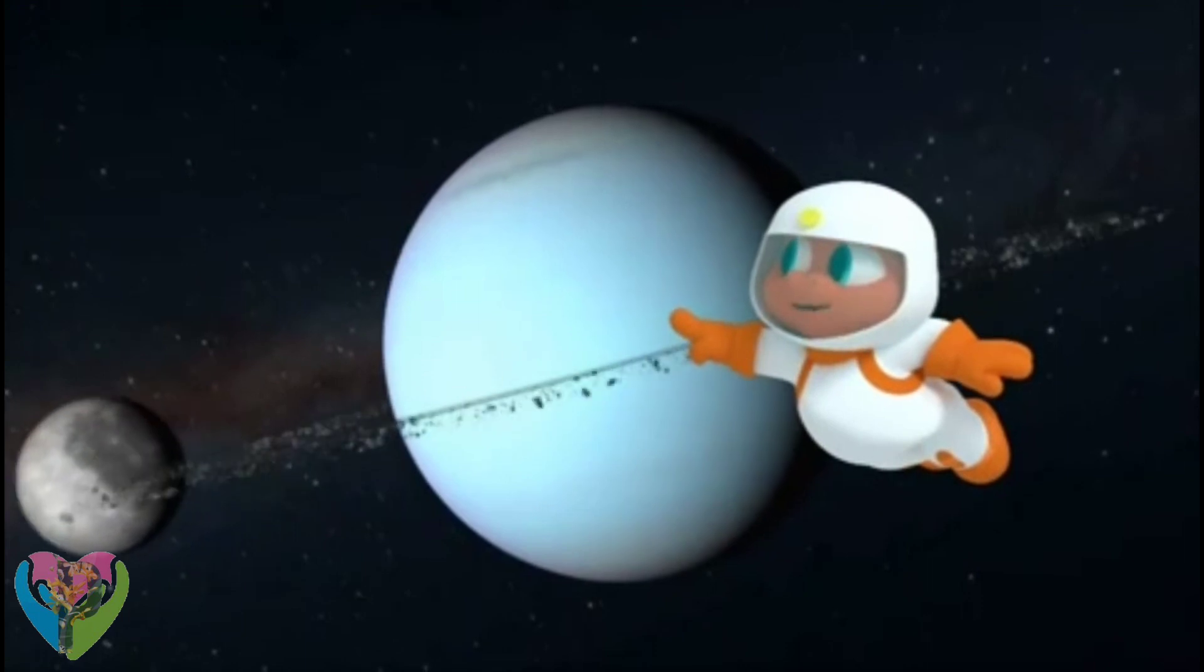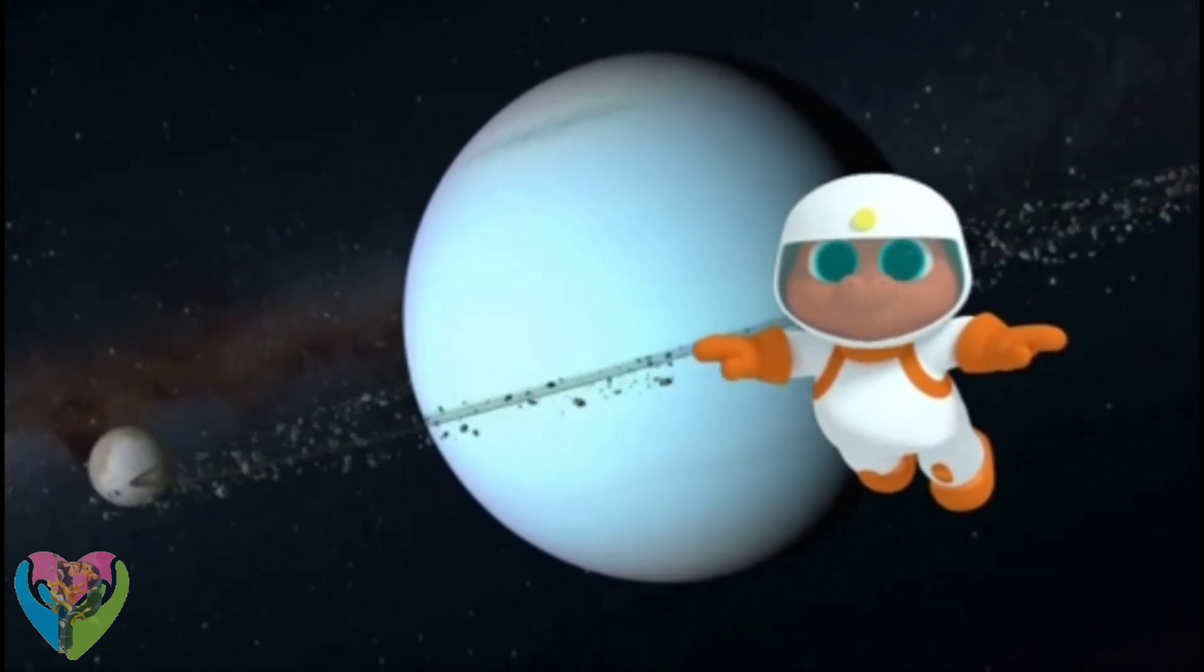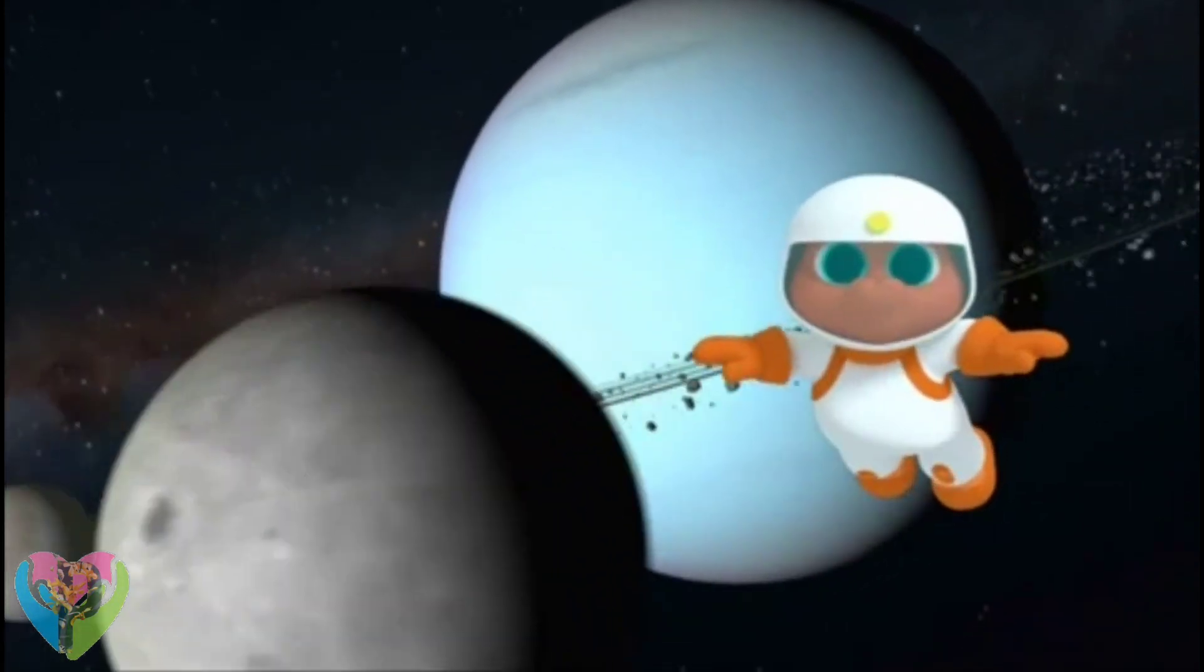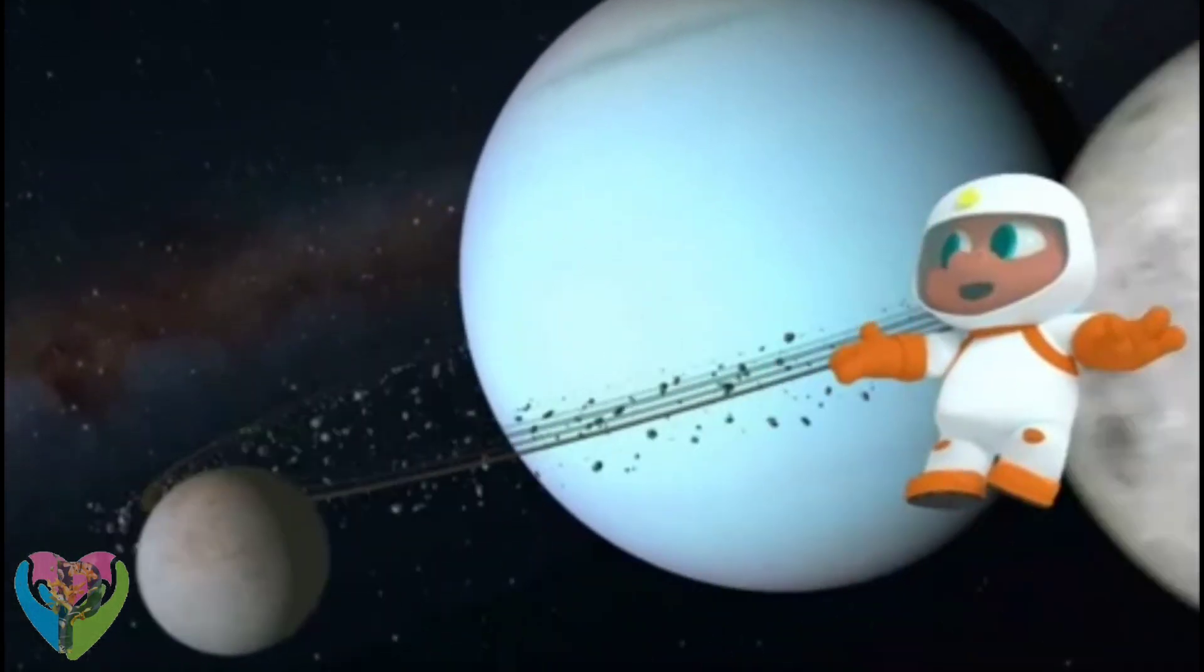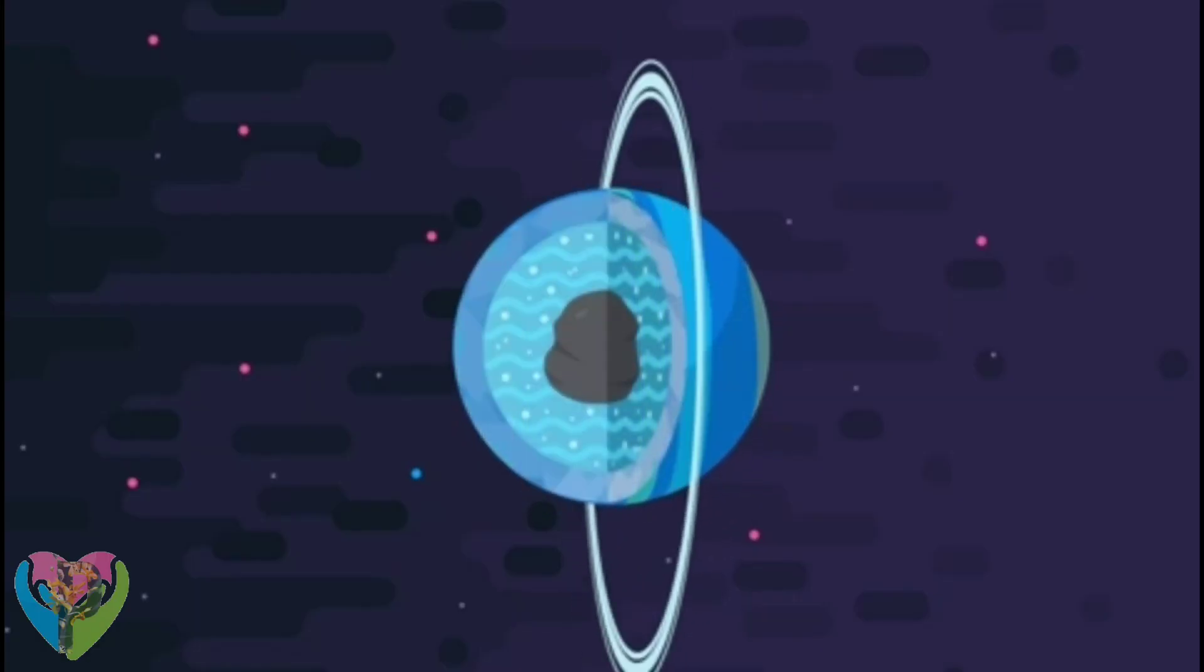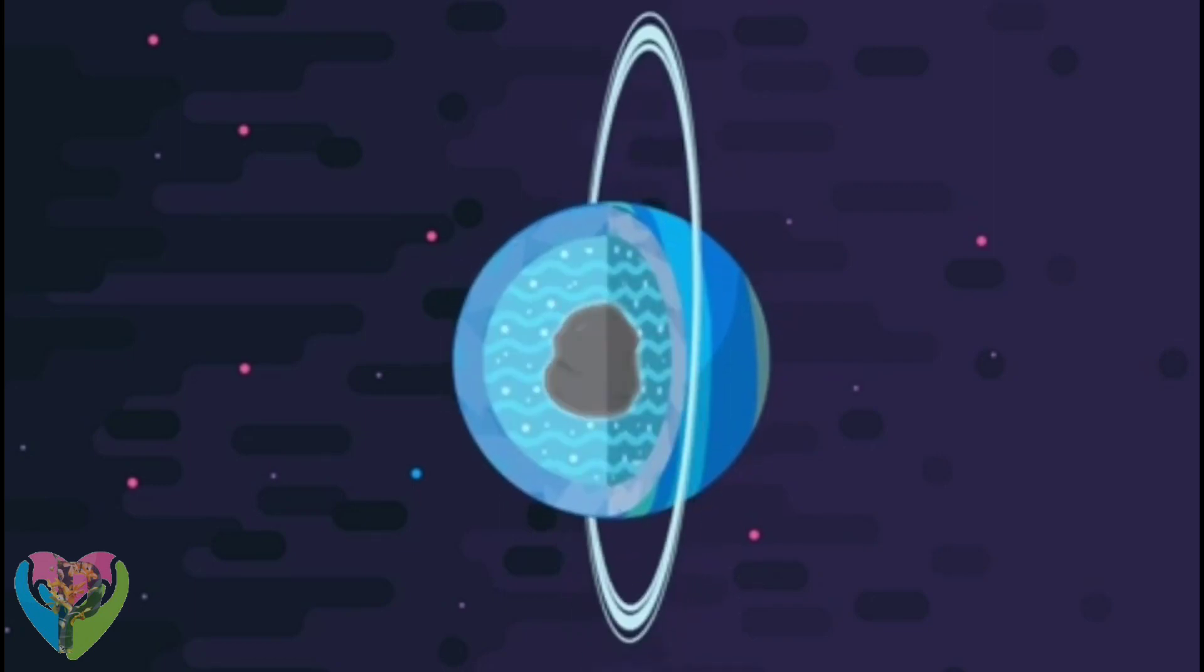Look! It has moons! Uranus has at least 27 moons orbiting it. And 13 rings. It's a very busy planet. It's what's called an ice giant, Gorby. That means it's made up of a slushy, icy liquid with rock and gas in the center.